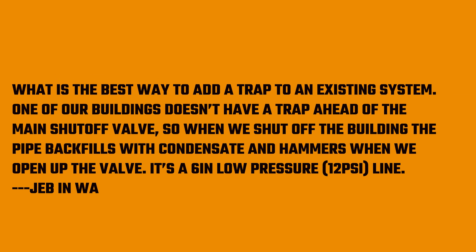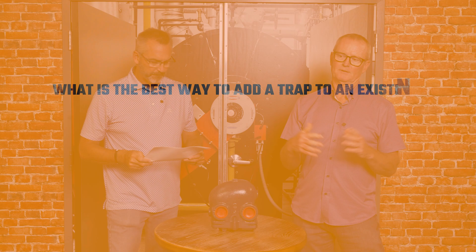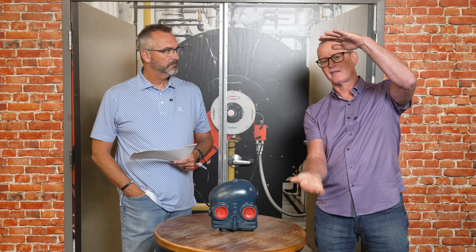We have a question from last week about traps: what is the best way to add a trap to an existing system? One of our buildings doesn't have a trap ahead of the main shutoff valve, so when we shut off the building the pipe backfills with condensate and hammers when we open up the valve. It's a six-inch, low-pressure, 12 psi line. The rule of thumb is: if you're questioning whether to put a trap in, put a trap in. You can never put too many traps in. For a six-inch line, drop a drip leg off of it, have a drain valve on the bottom, come off the side of that leg with your trap, then run that back. That'll take care of all your water.